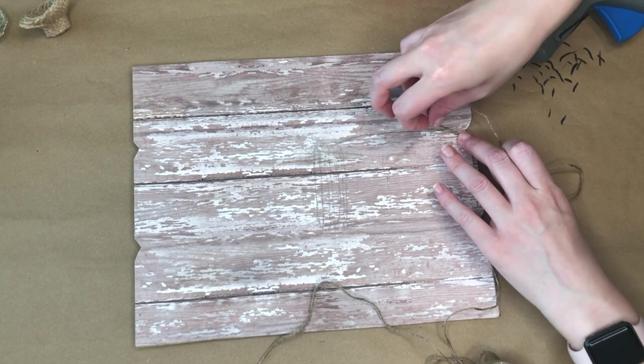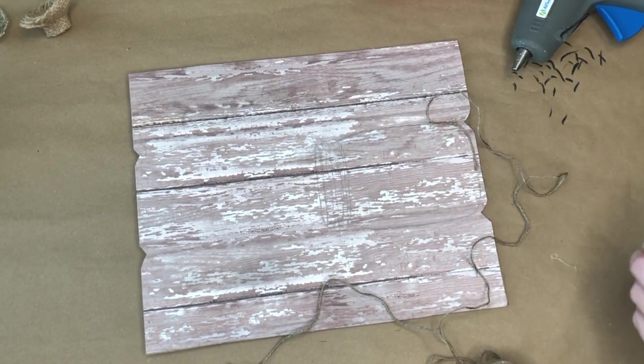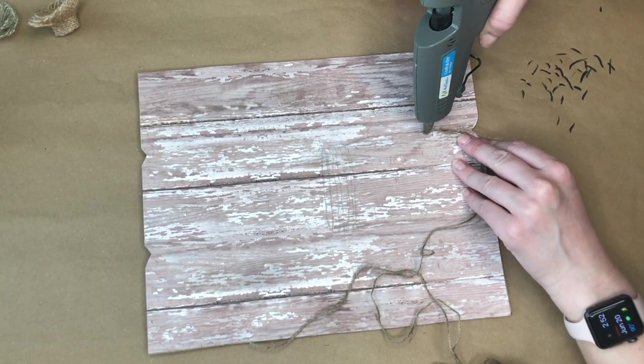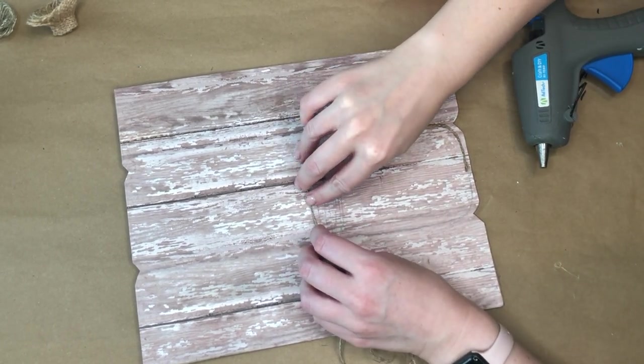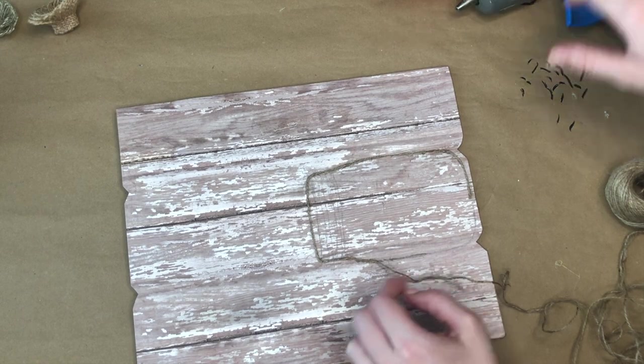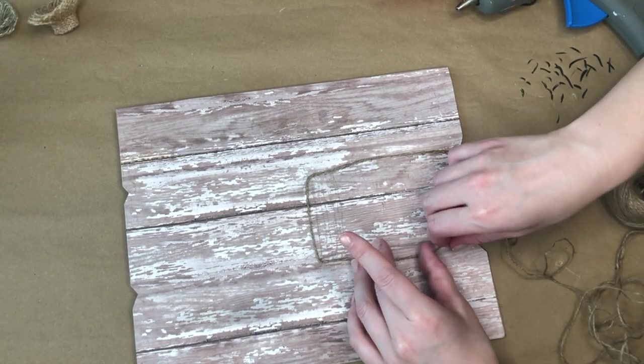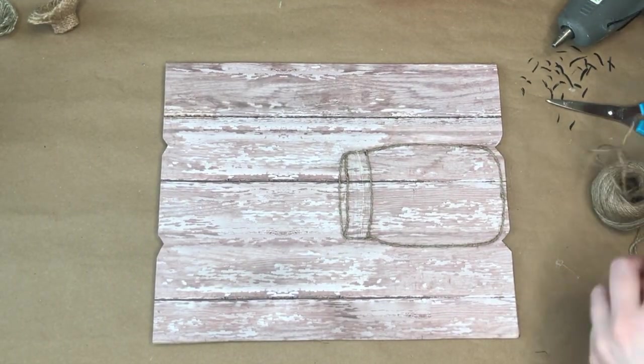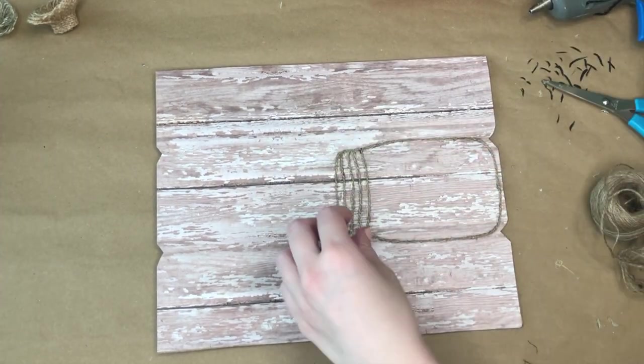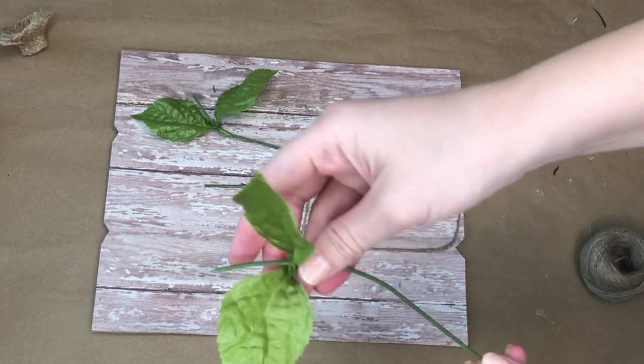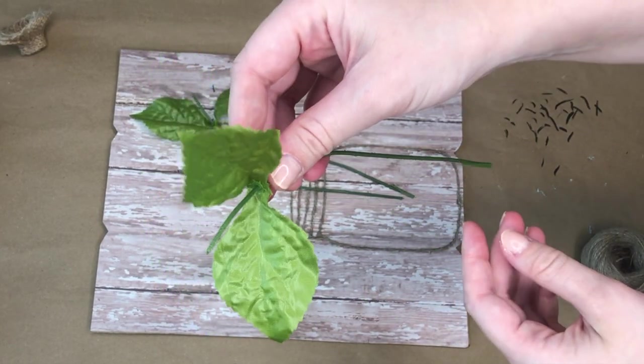To keep it rustic, I went ahead and used hot glue and jute, and I am just outlining the traced image. If you wanted something a bit more modern, you could go in with maybe some black or white paint or a marker. But again, I wanted to keep it a little rustic. So I decided to use jute and I just traced out the entire image.